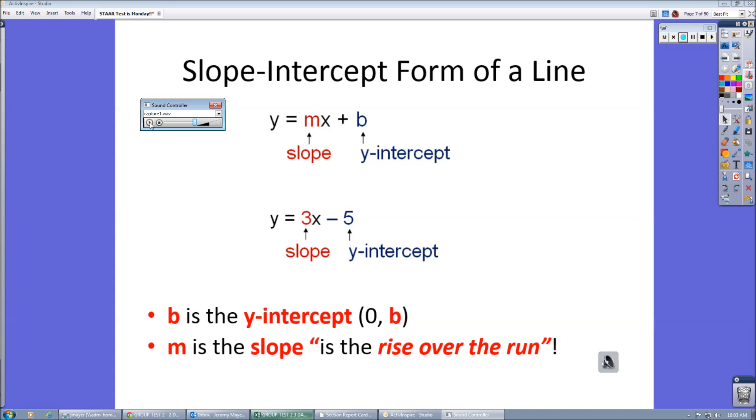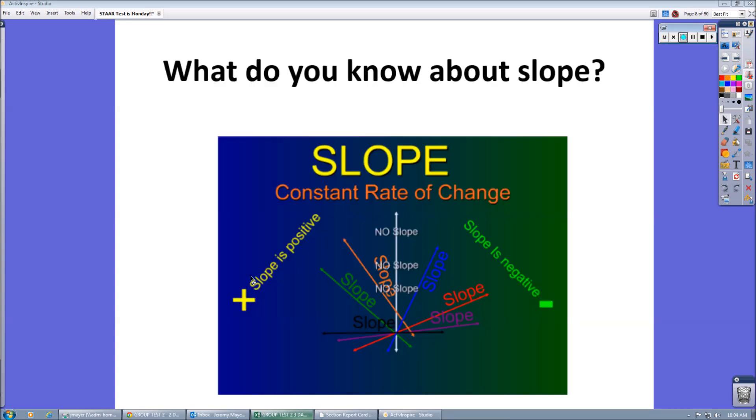The word for slope, constant rate of change. Be careful with that vocabulary. Constant rate of change.